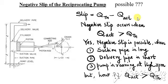Usually, it is expressed as a percentage. Negative slip can occur when Q actual becomes greater than Q theoretical. So, the question to answer is whether actual discharge can be greater than theoretical discharge.